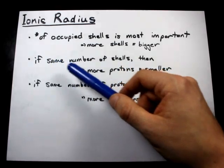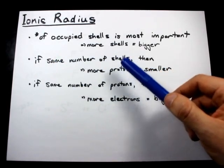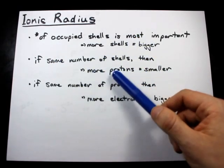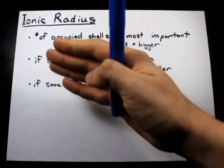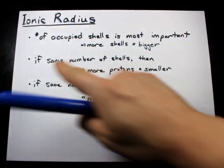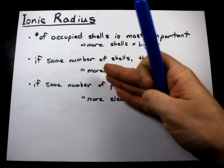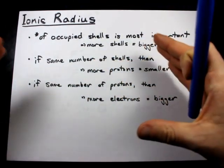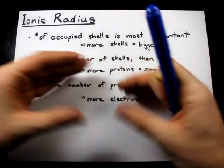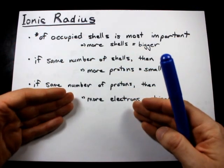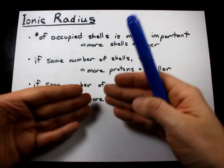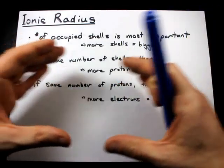If two ions have the same number of shells, it will come down to the number of protons in the center. If you remember the trend for atomic radius, it decreases as you go across a period because you have the same number of shells, but adding protons means each shell can be held closer, simply because the positive nucleus attracts the negative electrons.